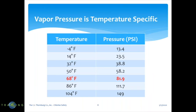Vapor pressure is temperature specific. If you have a cylinder at minus 4 degrees Fahrenheit when it's very cold, the pressure is very low — 13.4 pounds per square inch. As the temperature gets hotter, obviously the pressure builds. At 68 degrees Fahrenheit, which is ambient or normal temperature, the standard pressure is 81.9 PSI. On a very hot day at 104 degrees Fahrenheit, your pressure is going to be very high — 149 pounds per square inch. This is useful information for your plants when temperatures are very high.